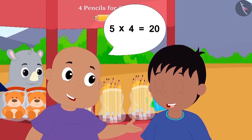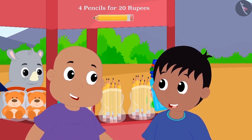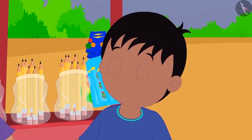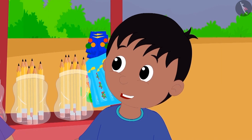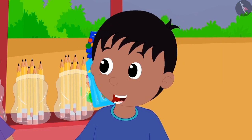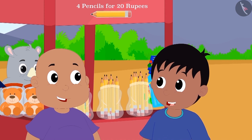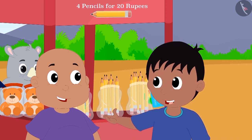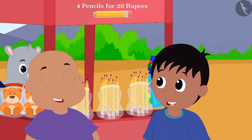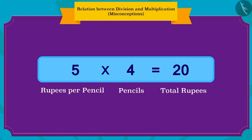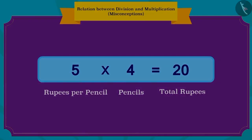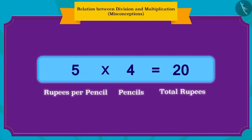Bablu wrote these division and multiplication equations for Raju. He told Raju that he found the answer for division by using multiplication. Raju got excited when he heard about the relation between division and multiplication. Raju said to Bablu that he can also write this multiplication another way: five rupees per pencil and four pencils, so the total amount is 20 rupees.